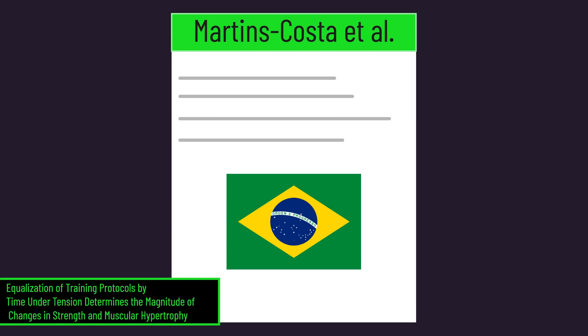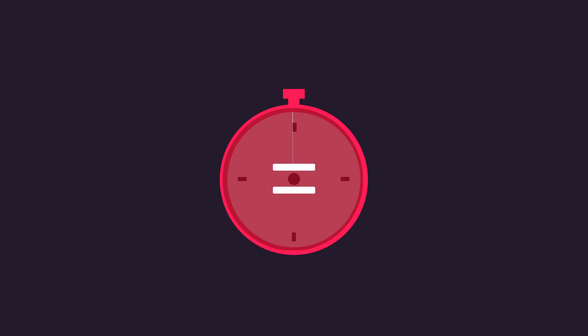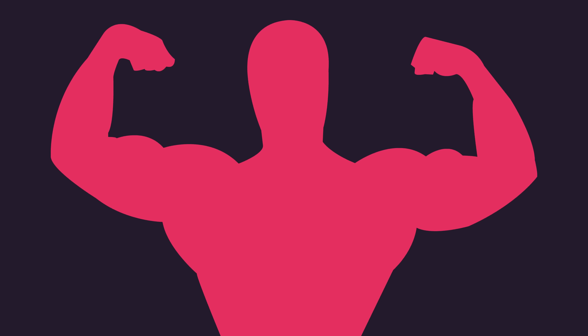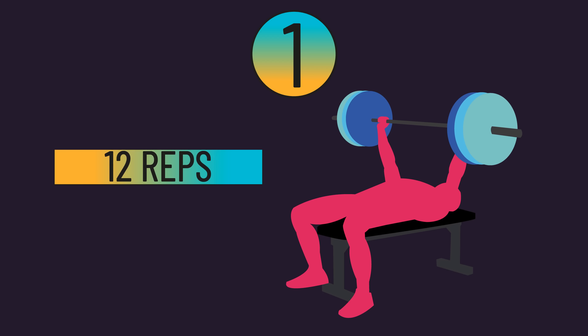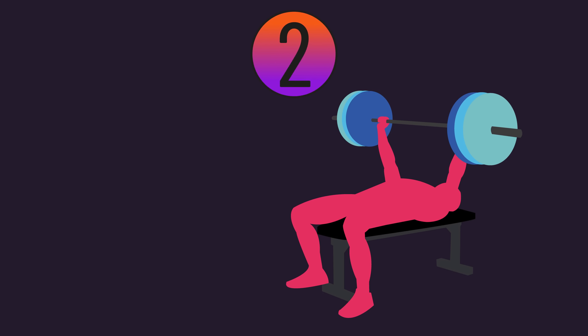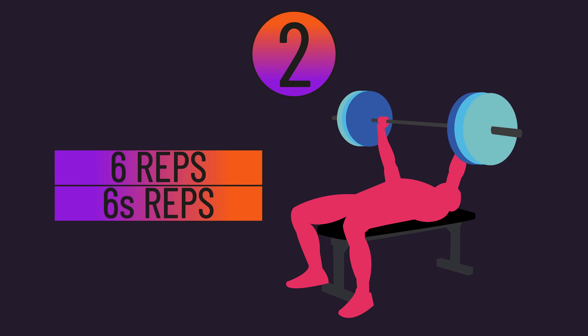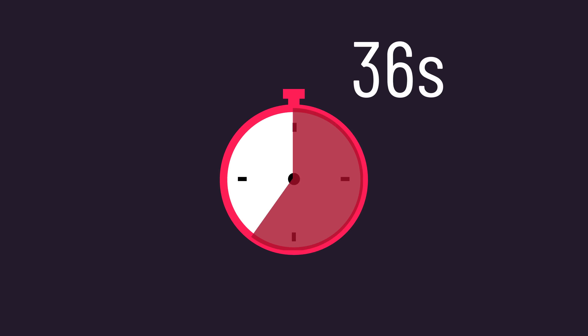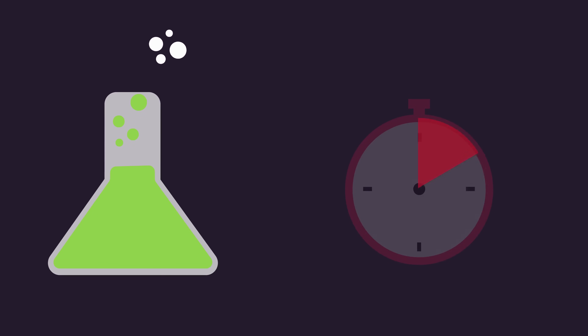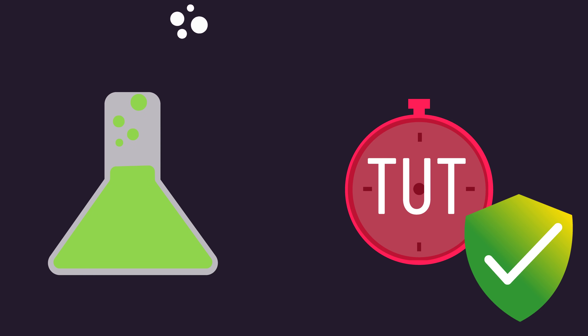A recent study out of Brazil established that when equating time under tension between two different rep tempos, muscle growth ends up being similar. One group performed sets of 12 reps with each rep lasting 3 seconds, while a second group performed sets of 6 reps with each rep lasting 6 seconds — time under tension per set was 36 seconds for both. Growth of the chest and triceps were similar between both groups, collectively suggesting time under tension may be integral for muscle hypertrophy.